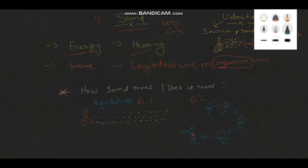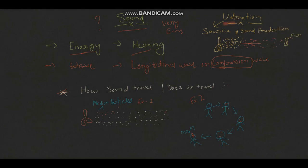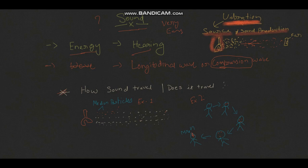Now let's go to another topic: vibration. Vibration is the only reason why sound is produced, so we can say that vibration is the source of sound production. If anywhere vibration is occurring, some sound is being produced. You can see an example of a tuning fork here — it is vibrating and the sound travels through medium particles and reaches the ear, allowing a person to hear the sound.